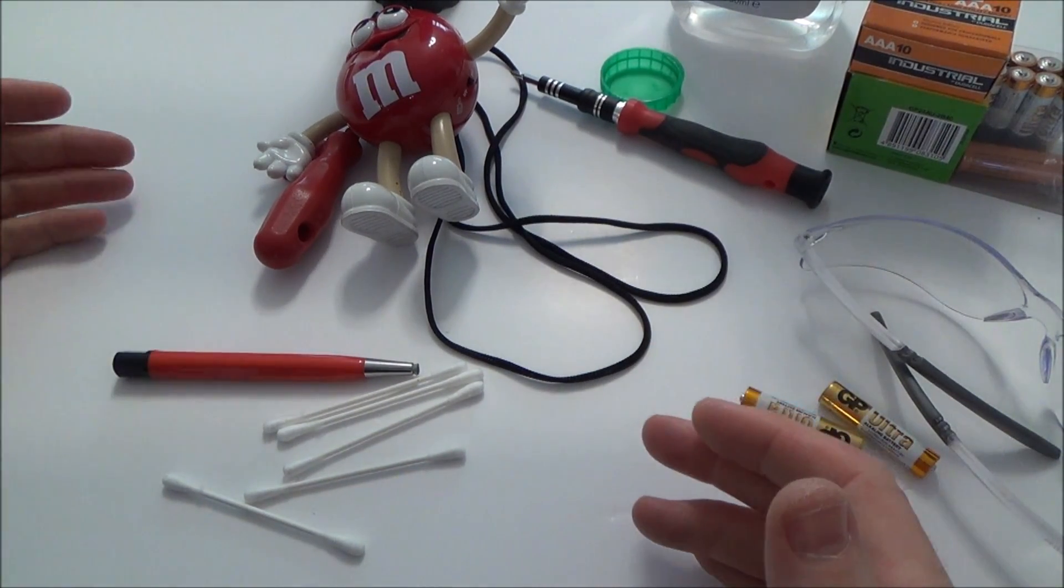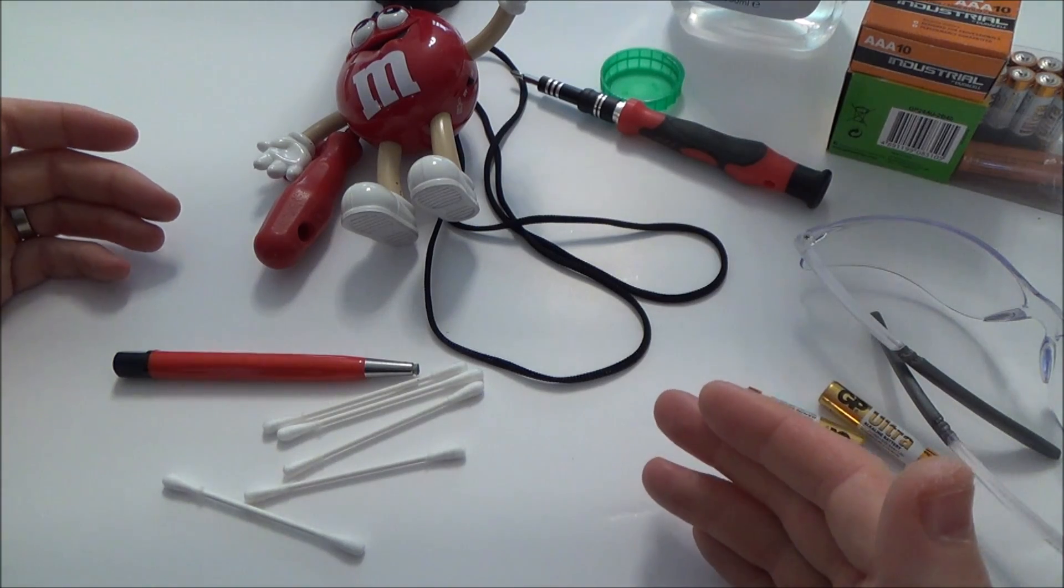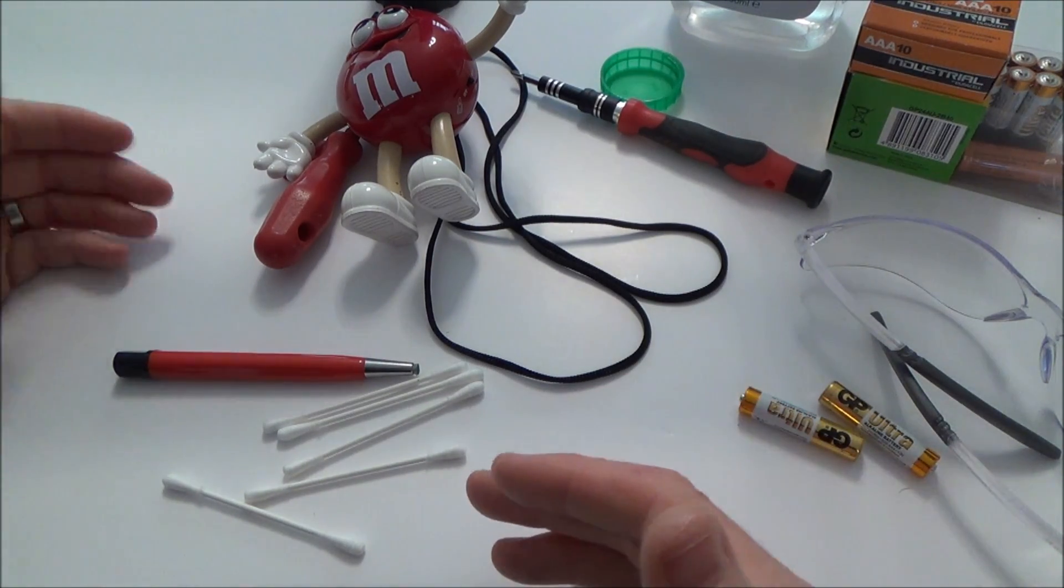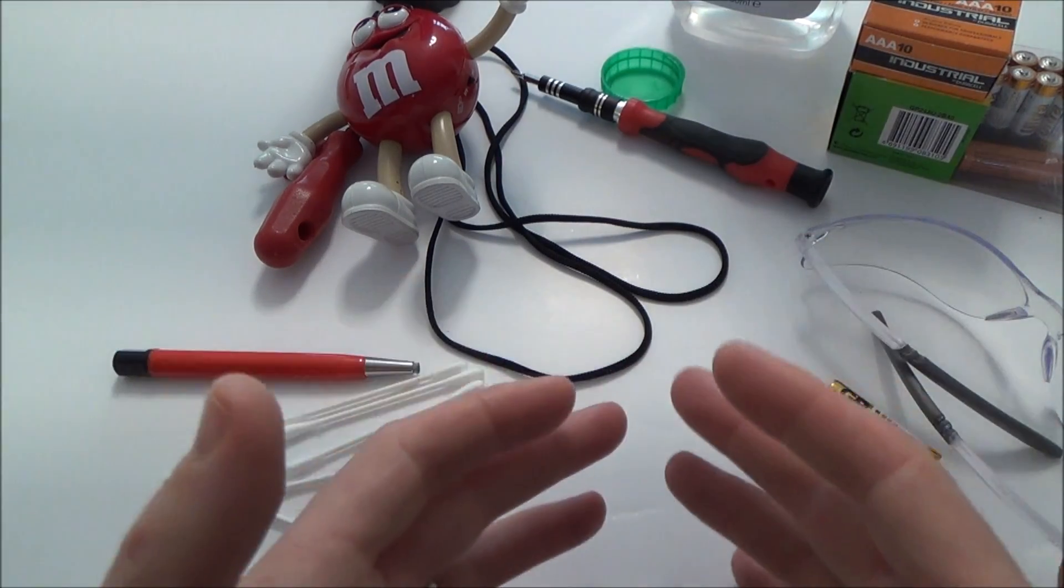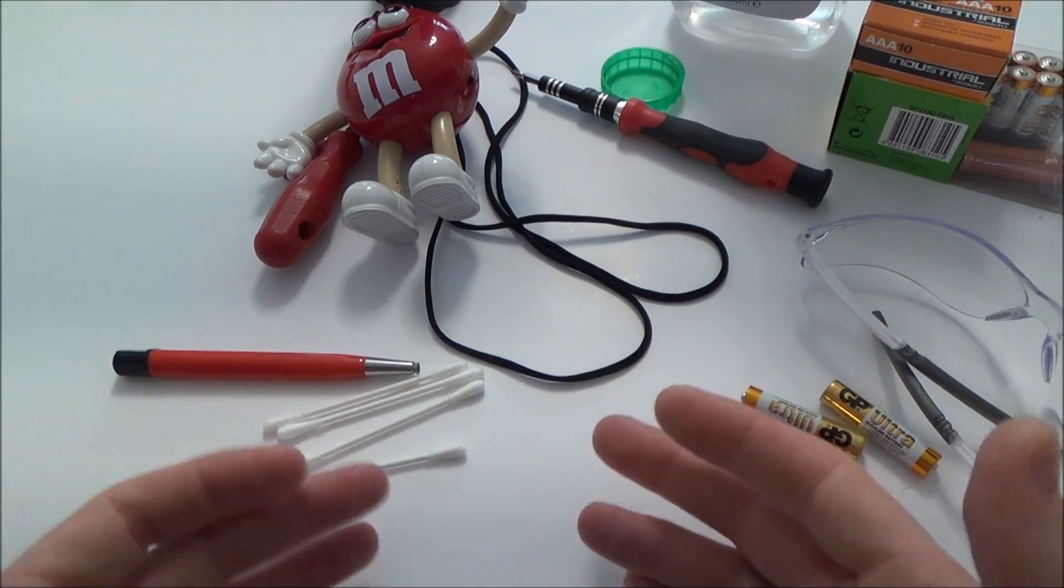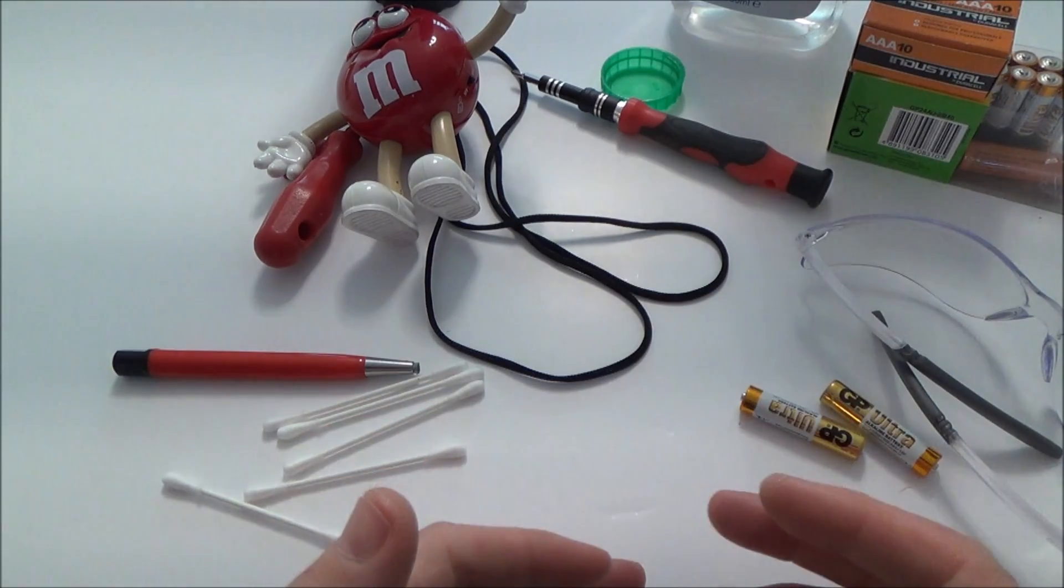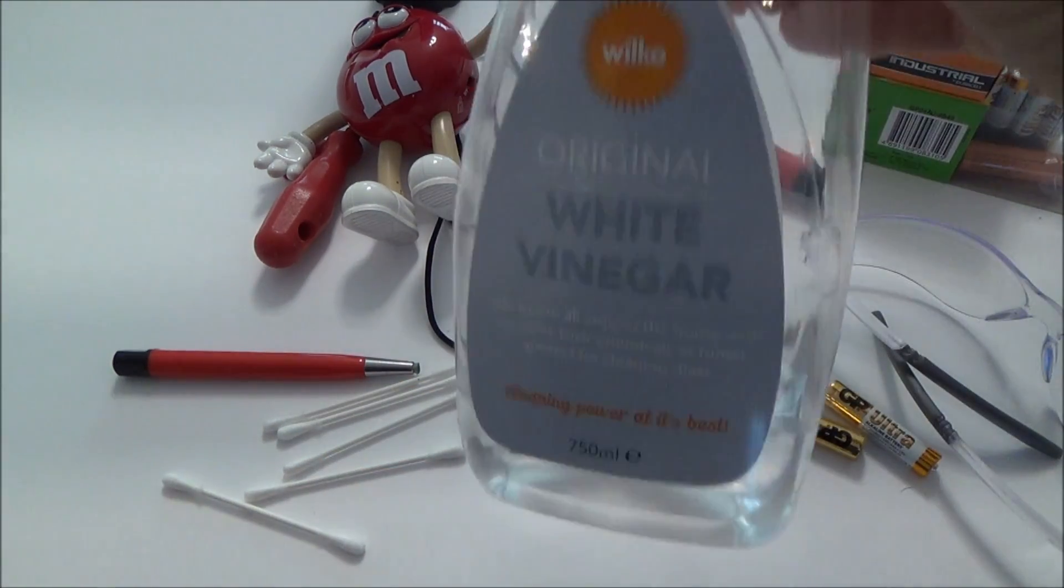If you were doing something different like a car battery which is acid based, then you would have to use an alkaline such as baking soda. So on an acid type battery use an alkaline, baking soda. On an alkaline battery use an acid, white vinegar.